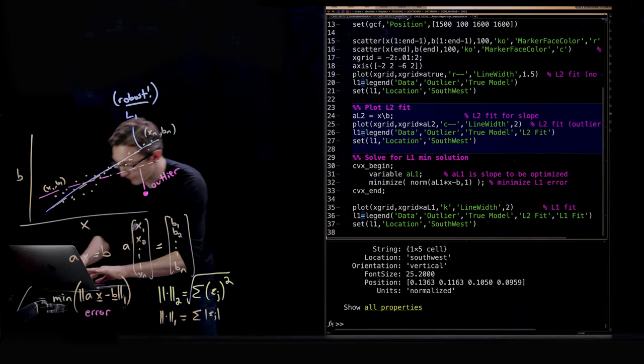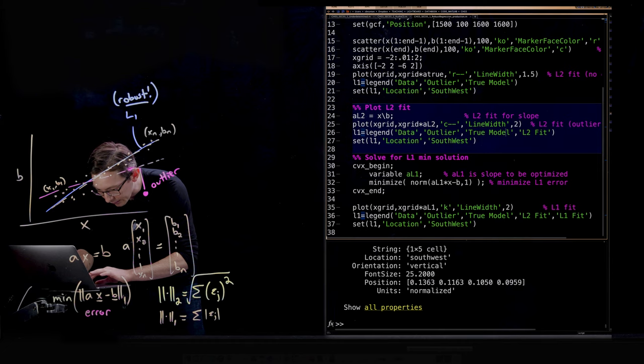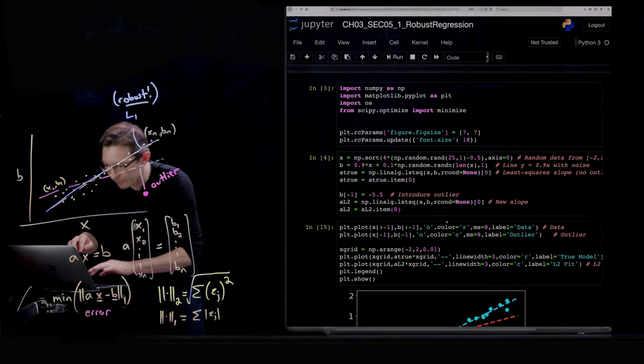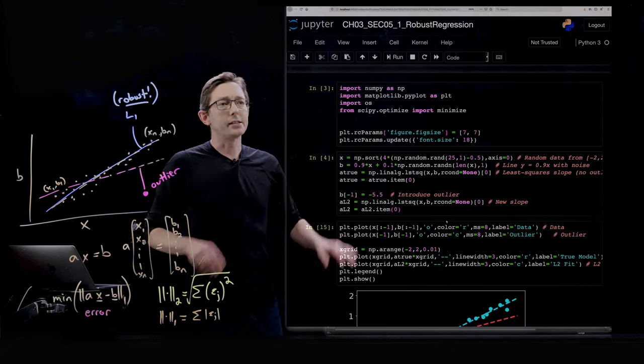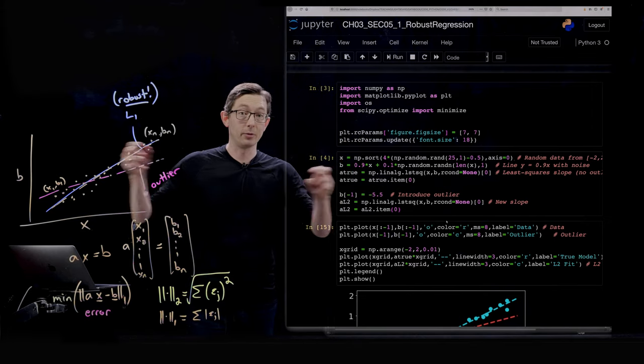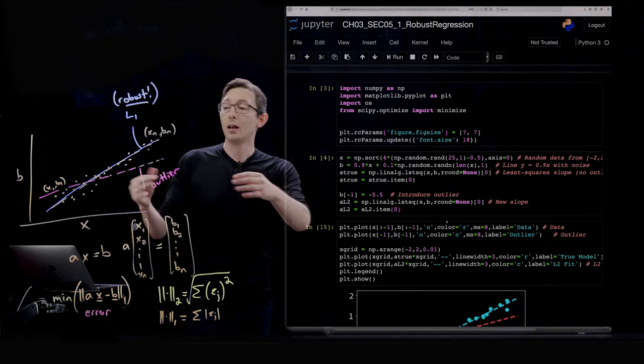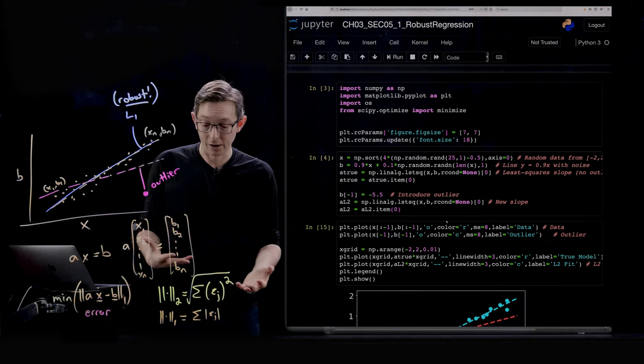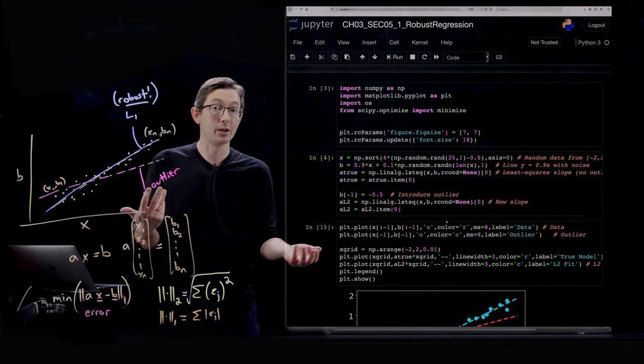Okay, so now we're going to code this up in Python. Here we're basically going to recreate this example. We're going to have a bunch of data points with the true slope that we know. We're going to introduce an outlier and we're going to see how L1 and L2 compare.